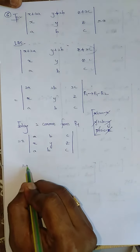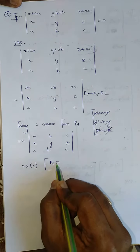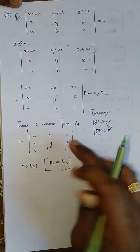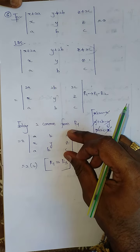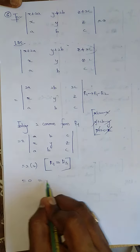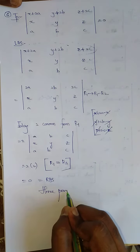Now you can easily find 2 into 0. Why 0? Because R1 is identical to R3. Any two rows or any two columns are equal, then determinant value is going to be 0, is equal to 0, is equal to RHS. Hence proved.